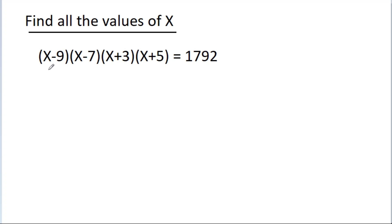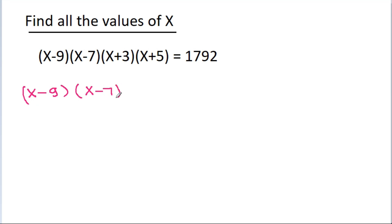In this video, we have given that (x-9)(x-7)(x-3)(x-5) is equal to 1792, and we have to find the values of x.